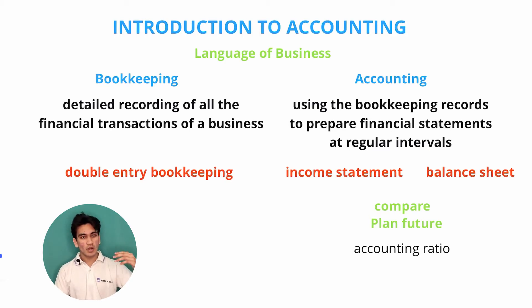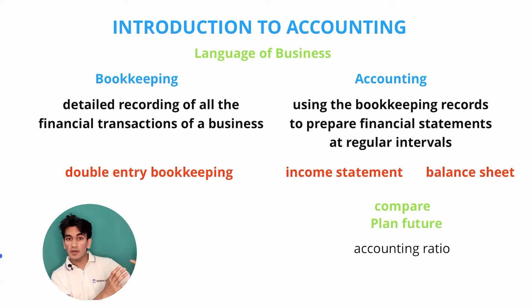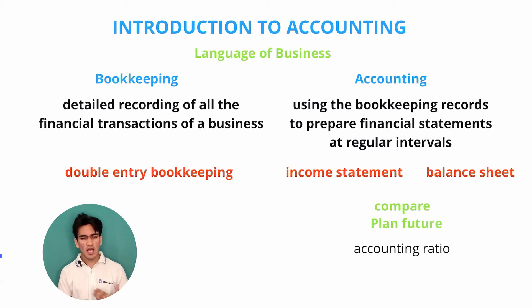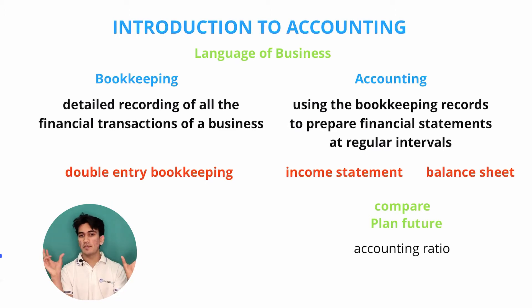While one account might increase, the other will decrease for that transaction to take place. In accounting, we use the bookkeeping records to create financial statements at regular intervals. Regular intervals usually mean annually, but they can be created at any point in time. Our financial statements include the income statement and the balance sheet.